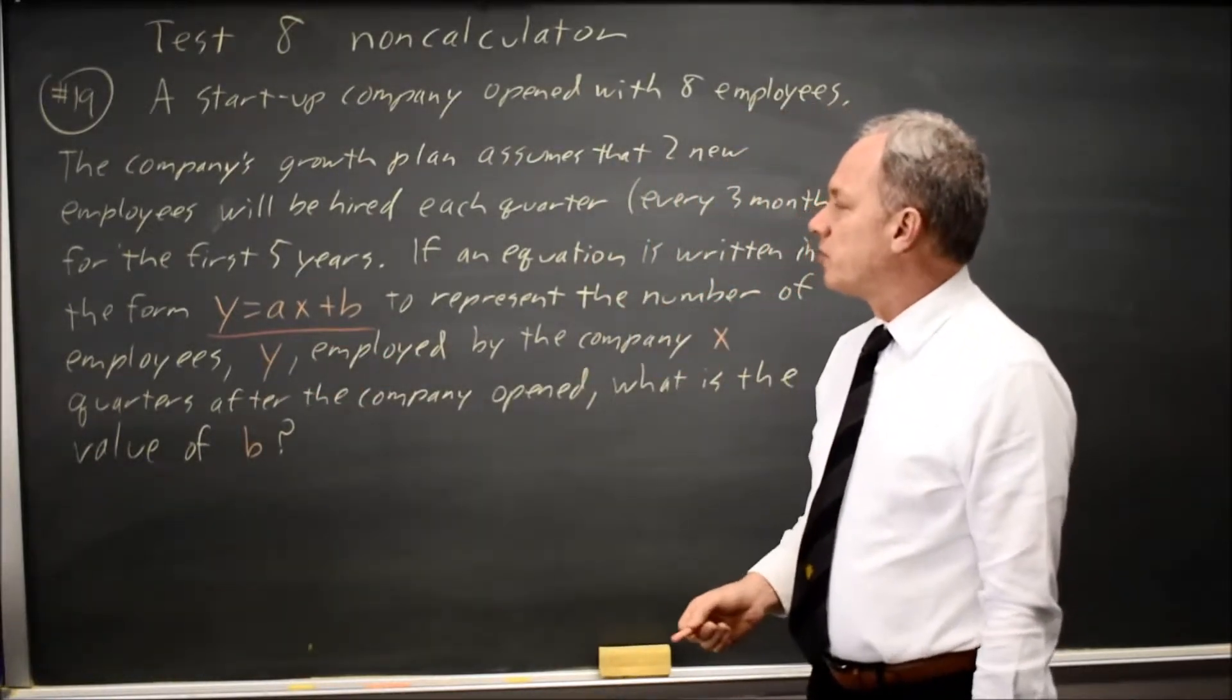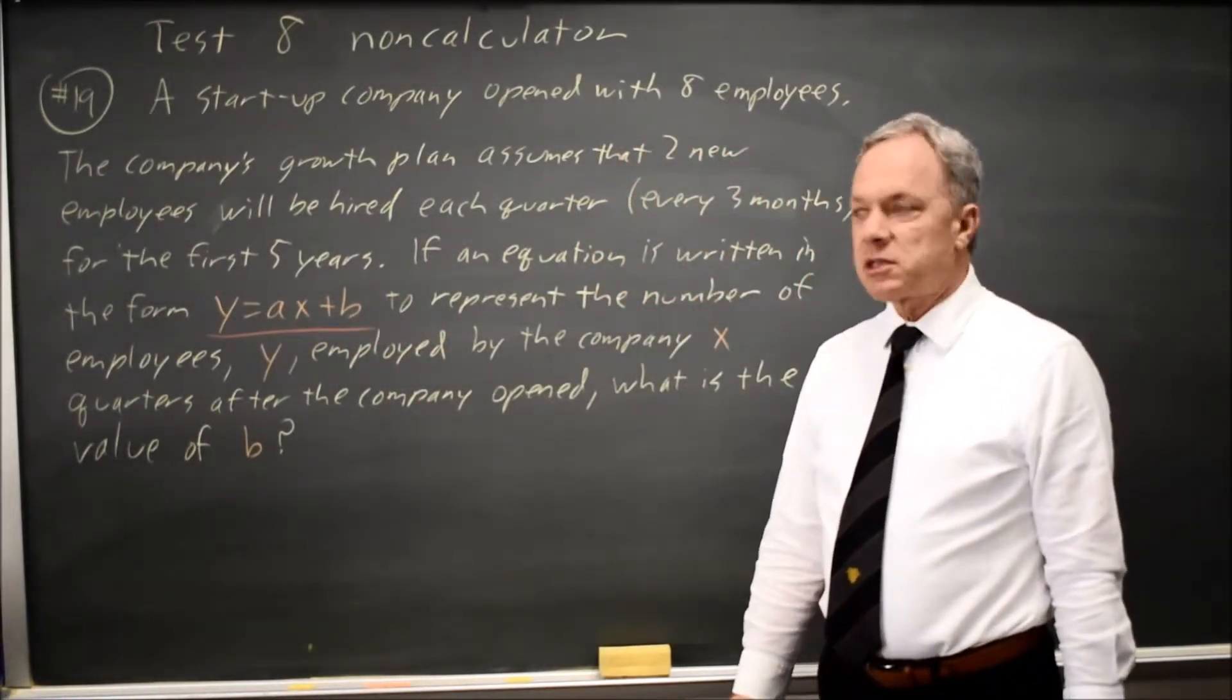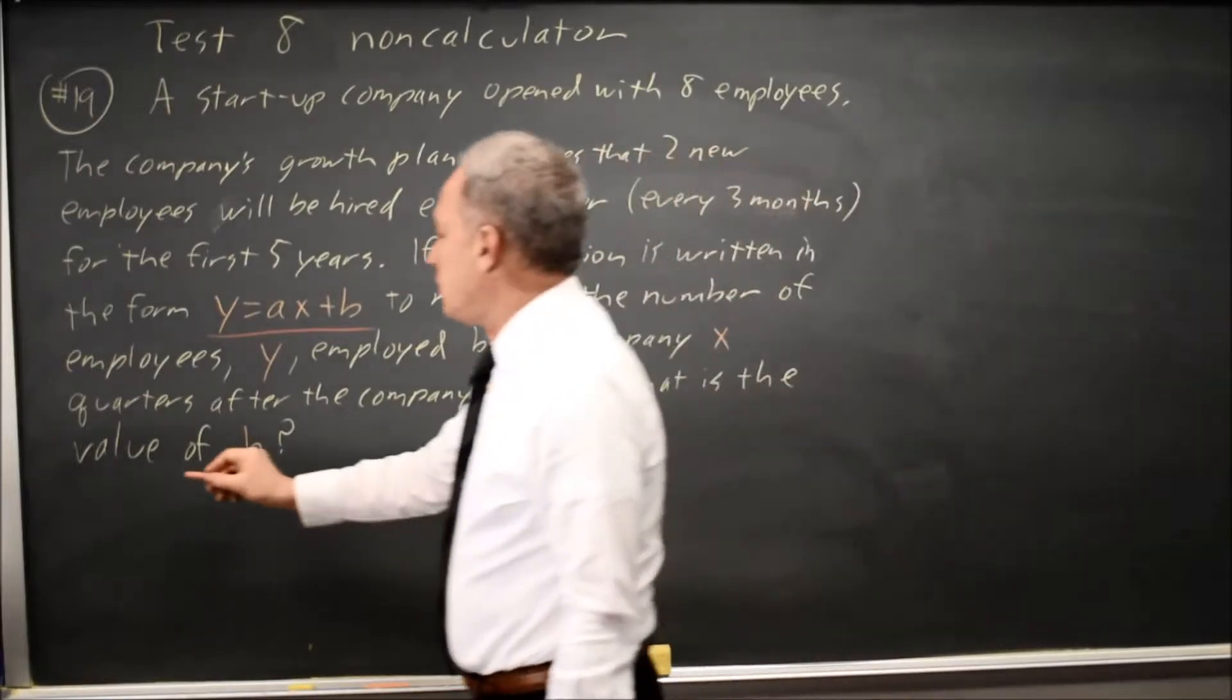So the number of employees is A times the number of quarters plus B. And they're asking, what is the value of B in context?